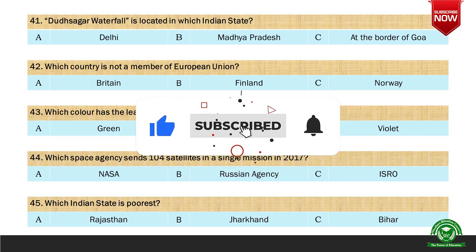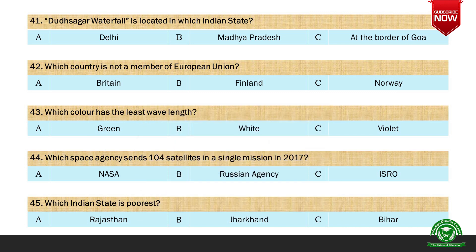Next question: Which Indian state is the poorest? Options are A. Rajasthan, B. Jharkhand, and C. Bihar. And obviously the correct option is C. Bihar.